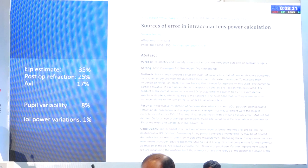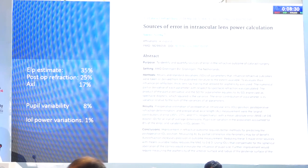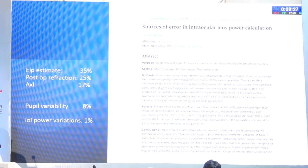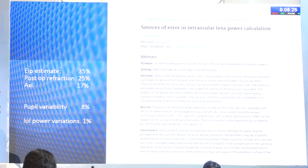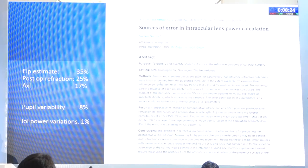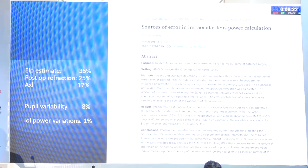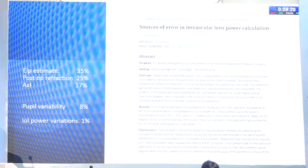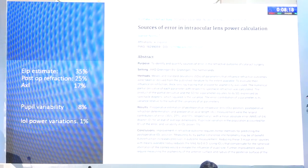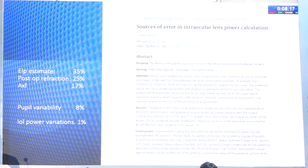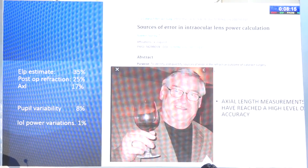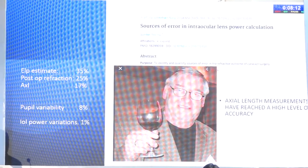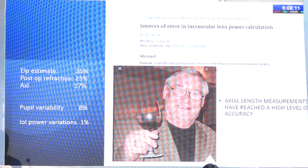The 2008 JCRS article by Savarkar and Norrby told us that the common causes for biometry errors are ELP estimation — that is formula error — which is the most important thing. Today we know that the earlier generation axial length error has largely been conquered because of the widespread use of optical biometry.